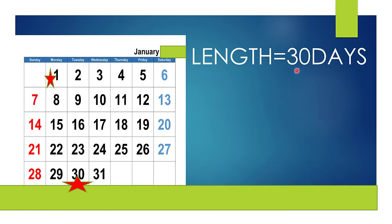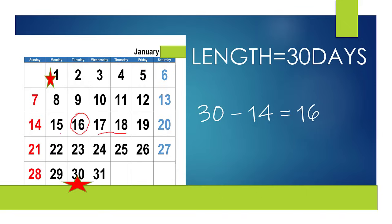Let's do another example. If the length of your cycle is 30 days, minus 14 equals 16, so maximum chances of ovulation are at 16th January. Adding and subtracting 2, the maximum chances of ovulation range from 14th January till 18th January — these are the days in which you have maximum chances to conceive.